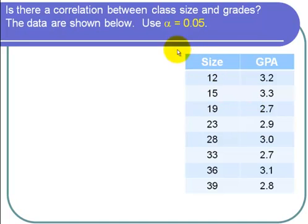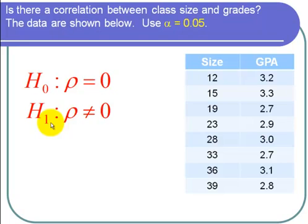I want to find out if there is a correlation. I'm going to run a hypothesis test. The null hypothesis, to find out if there's a correlation, is that the population correlation, which I call rho, is equal to zero. If there's no correlation, then that correlation is zero. The alternative hypothesis is that the population correlation is not equal to zero.